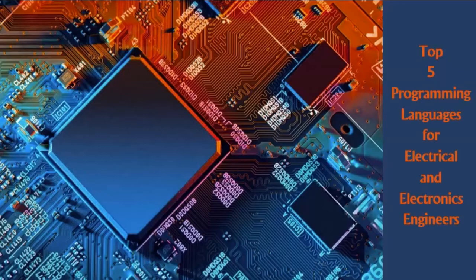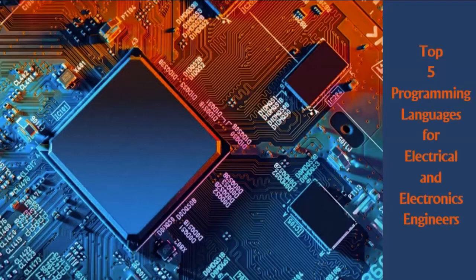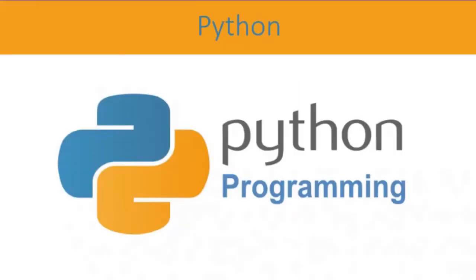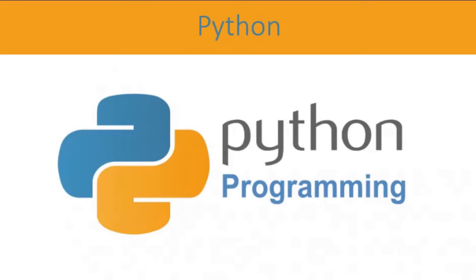Let's get started. On number five we have the Python programming language. Python is really a powerful language — easy to understand, easy to use, and you can really achieve a lot with it. It's used in artificial intelligence and machine learning, and you can use it to quickly make programs for testing and automation.